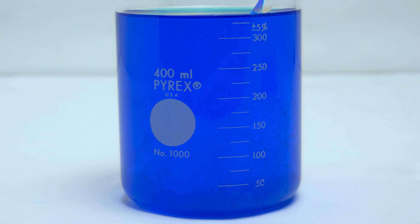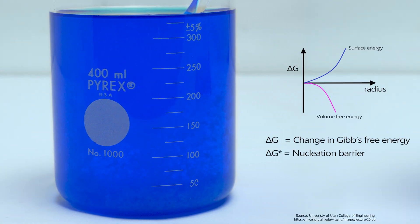While it's thermodynamically favorable for the copper sulfate to crystallize out of the solution, the copper and sulfate ions became trapped by a nucleation barrier, preventing crystal formation.